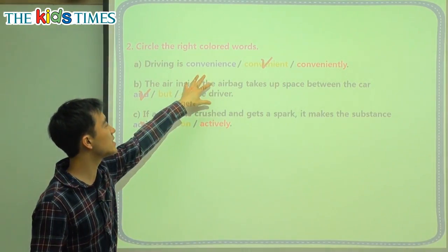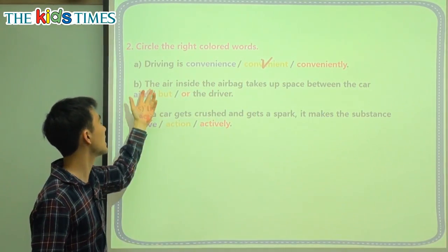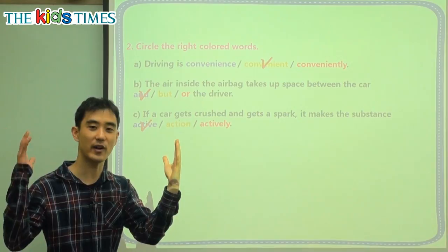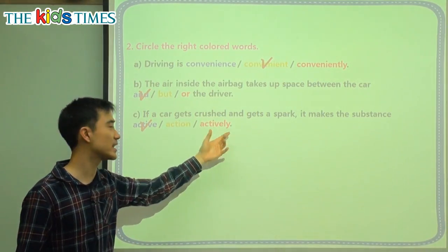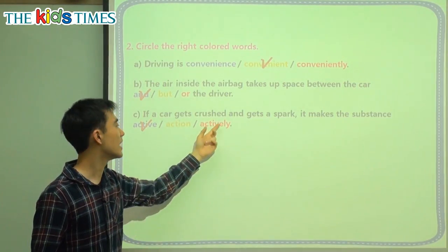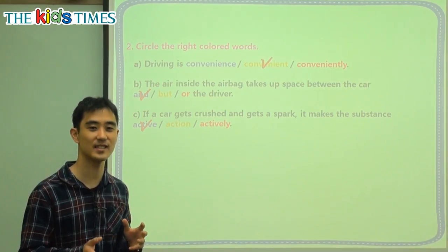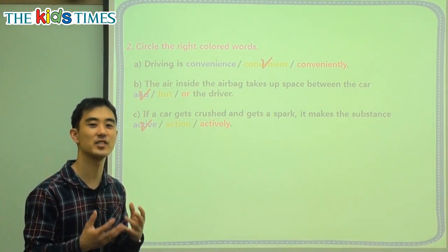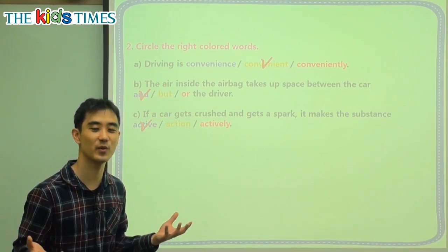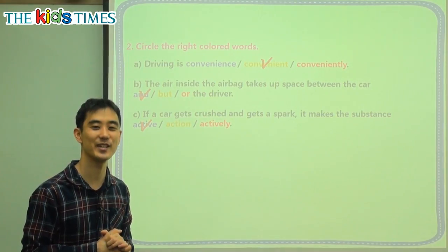To review: convenience — 편리, 편리하다, 편리스럽게. When talking about 'between,' we use 'and' — between my left hand and my right hand is my face. And: active is the adjective, action (활동) is the noun, and actively is the adverb. So next time you go on your car rides, really try to pay attention — what is there to make you safe? Is it only the airbag? No, there are many other things: sensors everywhere, seatbelts. Let's everyone try to have a safe ride. Thank you for joining us for Kids Times. My name's Chris. I'll see you next time.